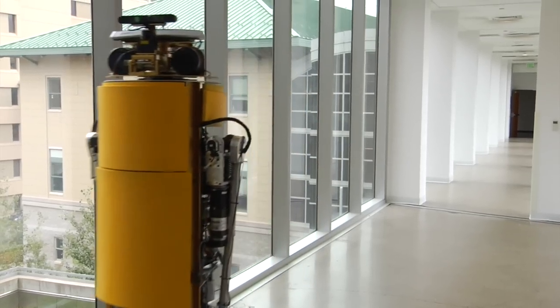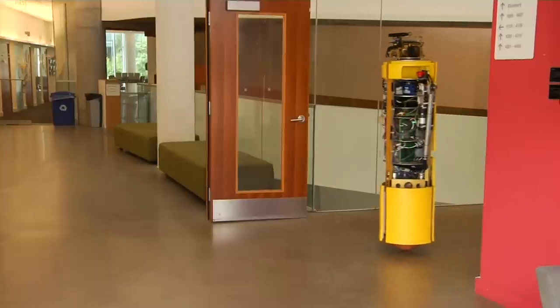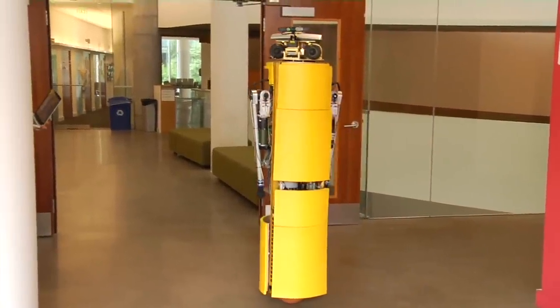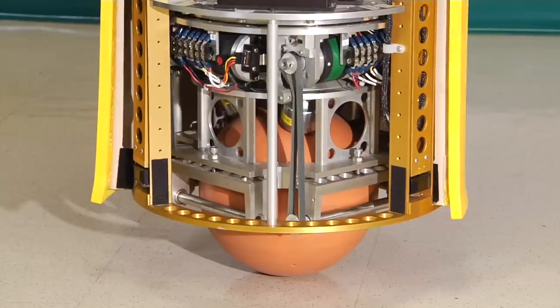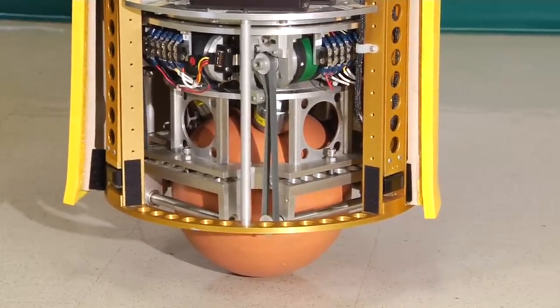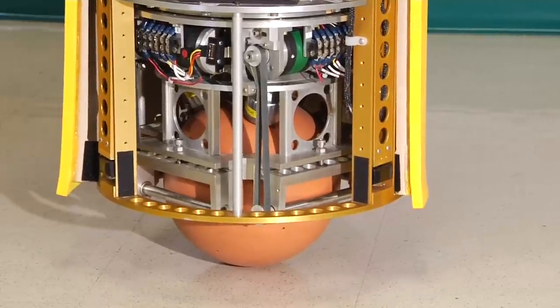The ballbot body must dynamically balance on the spherical wheel and move about by managing its center of mass with respect to its point of support on the floor. Our ballbot's wheel is driven by an orthogonal set of rollers. It's essentially the inverse of the drive arrangement in a ball-type computer mouse.